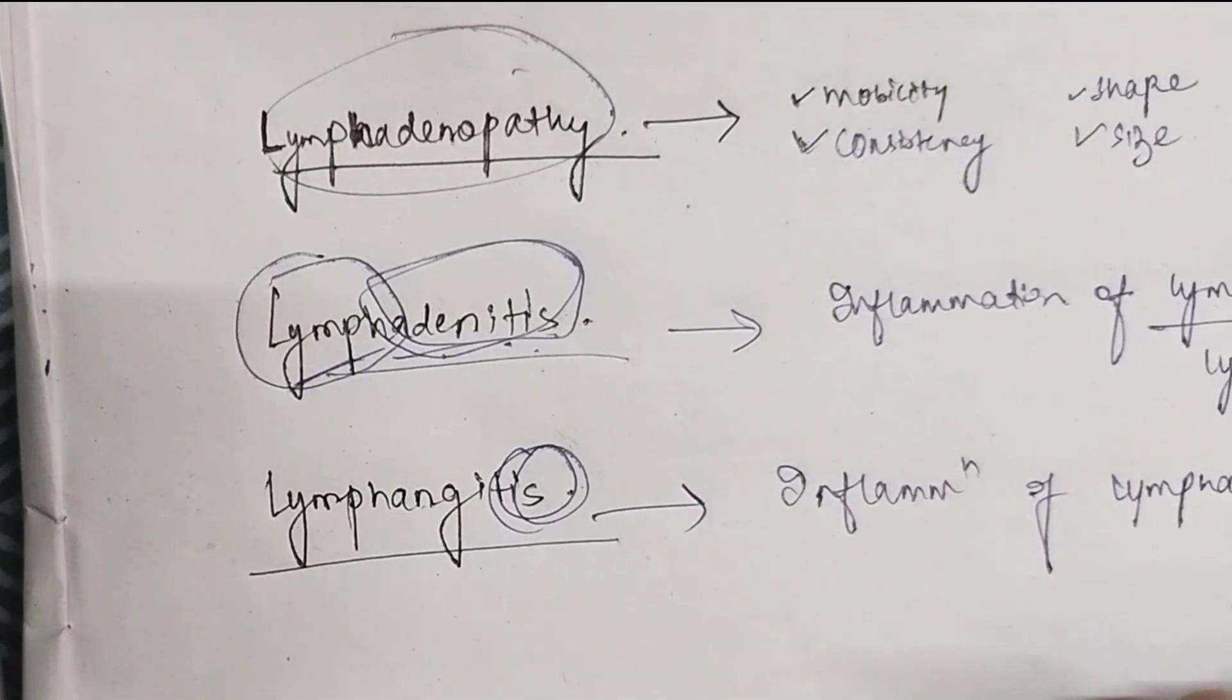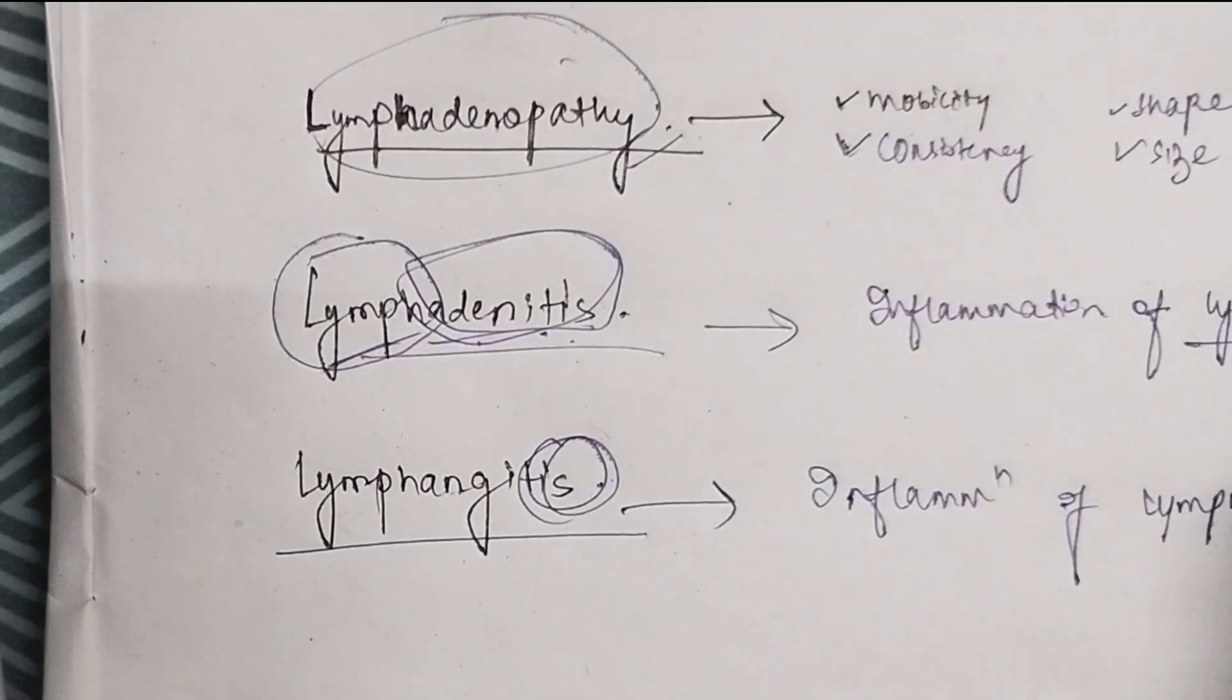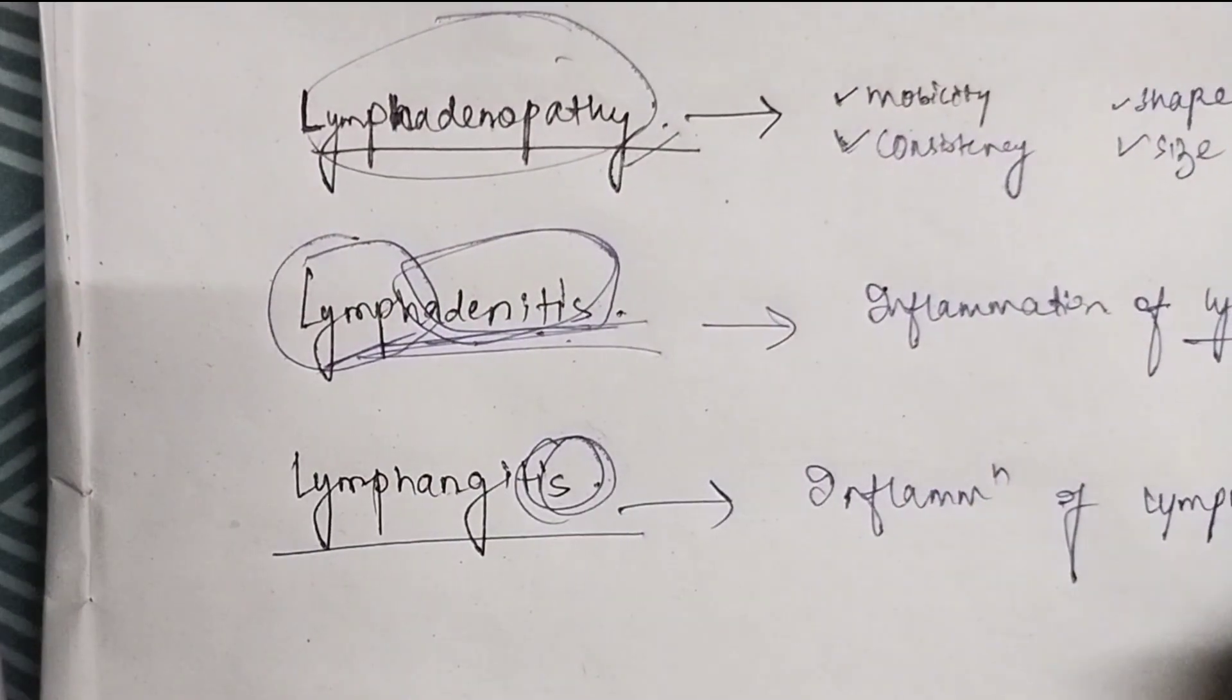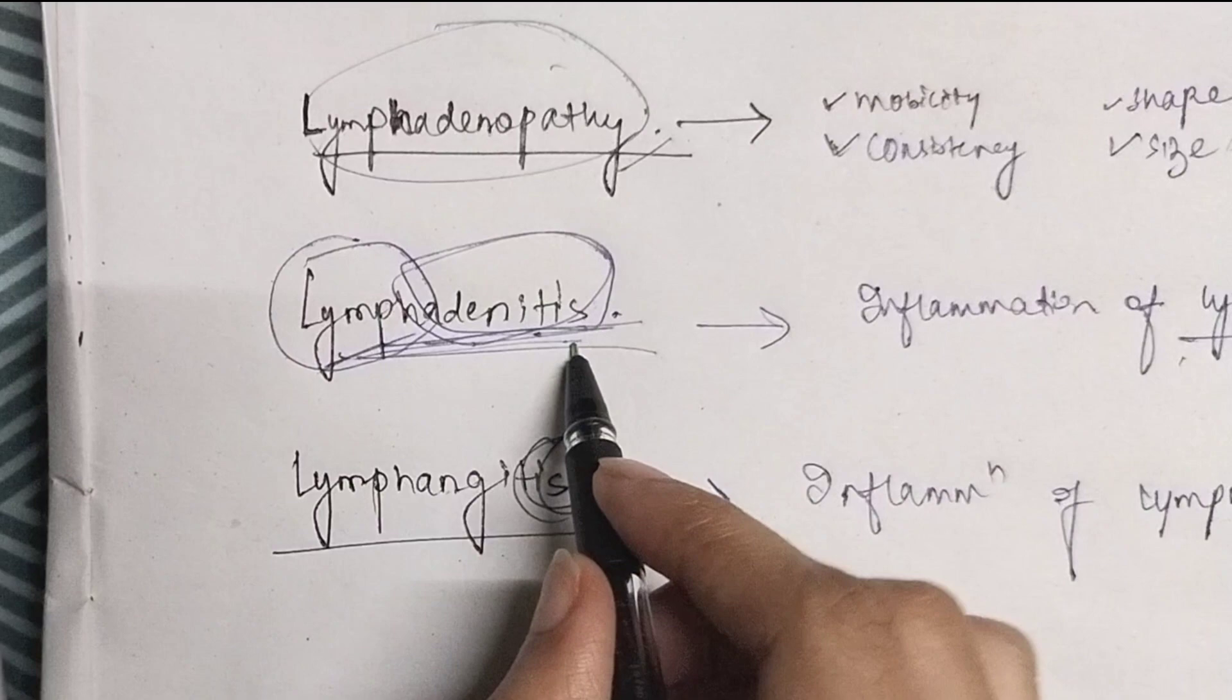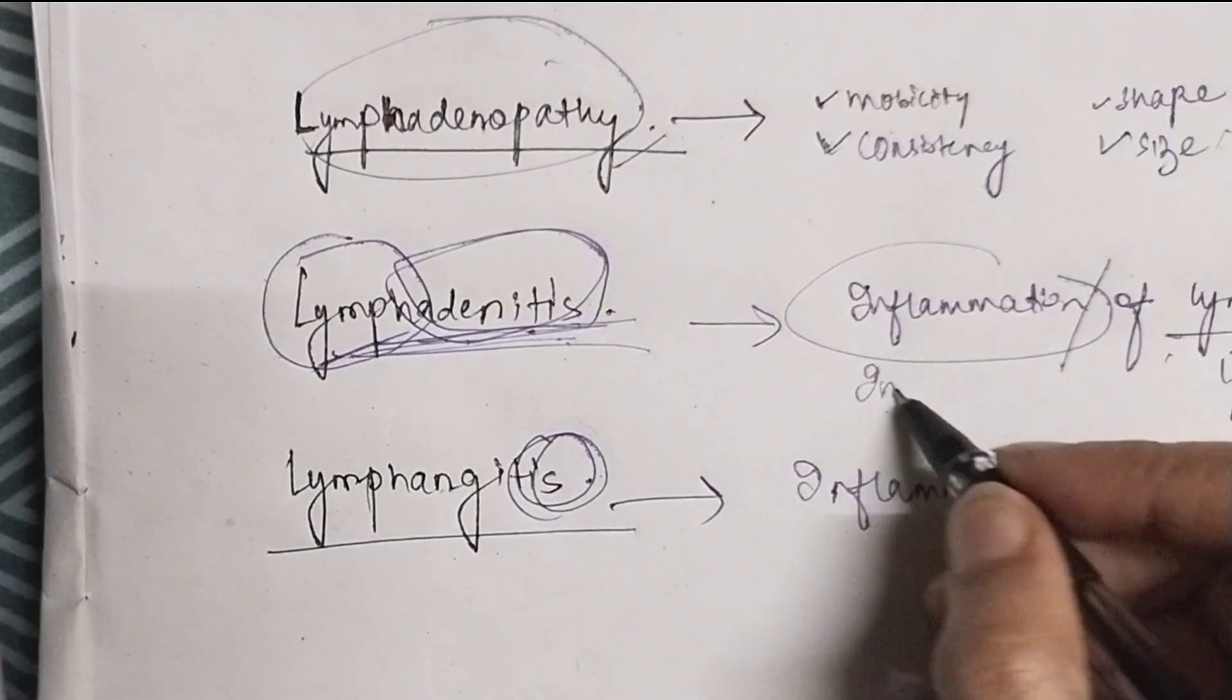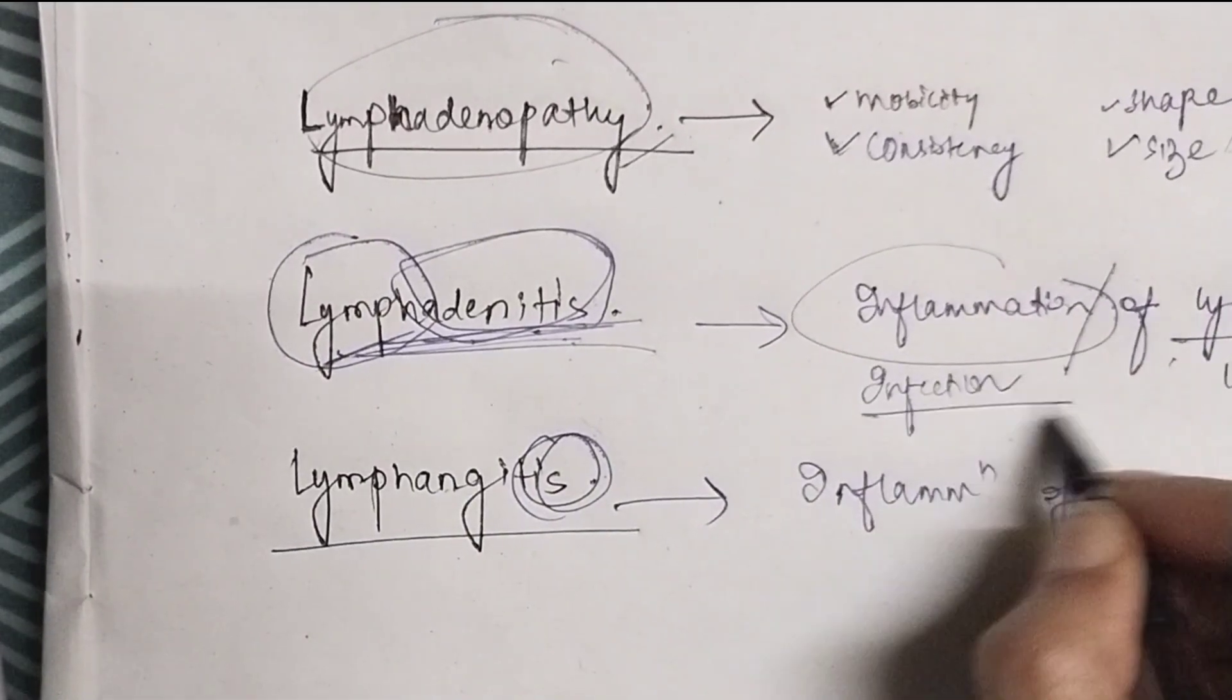Now you will say that lymphadenopathy also involves lymph nodes, lymphadenitis also involves the lymph nodes, then what is the difference? Usually lymphadenitis is due to the inflammation or infection of the lymph nodes, so it involves only the infection component.